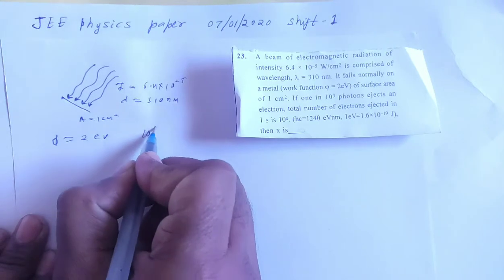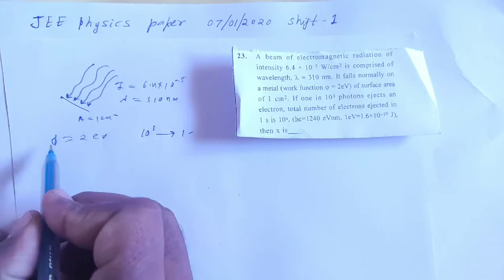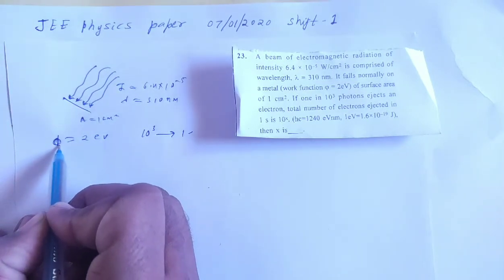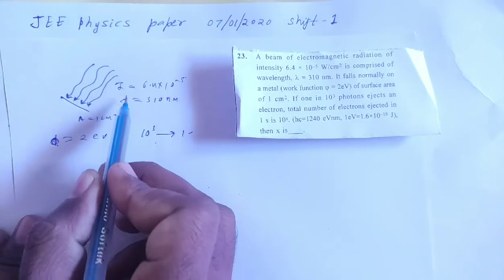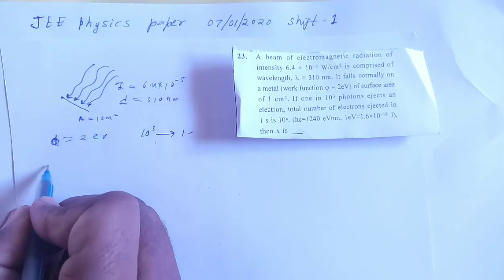We have 10³ photons ejecting one electron. So first let's see if this energy can be more than work function. First let's check the energy of the wavelength, what will be the energy of the photon.